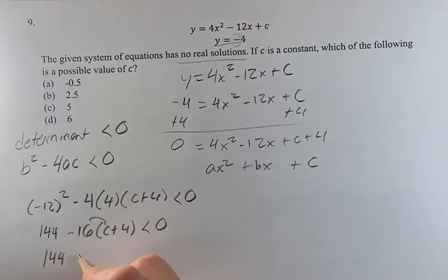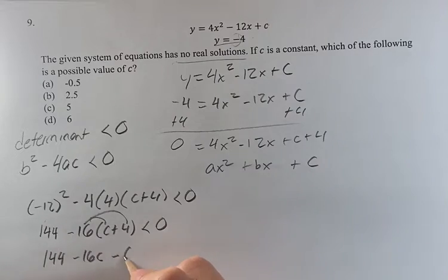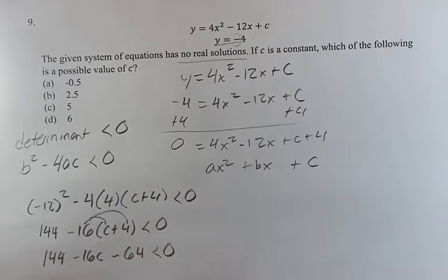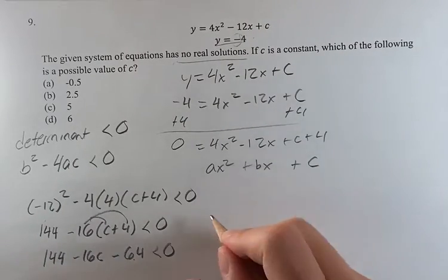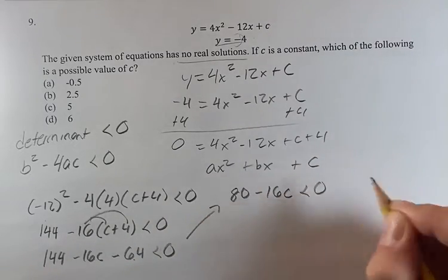So we have 144 minus 16c. Distributing this negative 16, minus 16 times 4 is negative 64. 144 minus 64 is going to be 80, minus 16c is less than 0.